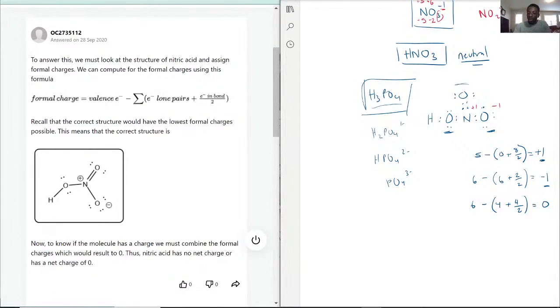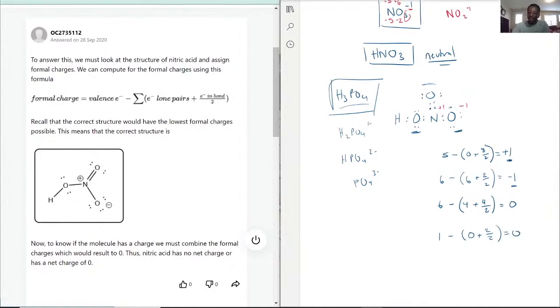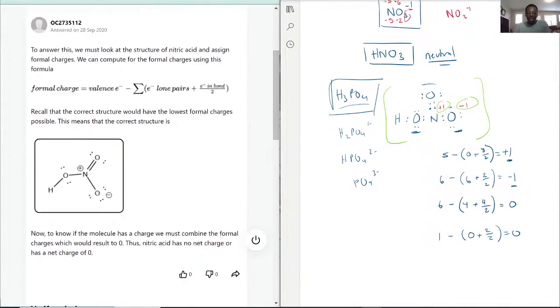The oxygen up top, same thing actually, it has 6, it has 4 by itself, and it's sharing 4. And the hydrogen, just to make sure, typically has 1, doesn't have any, and it's sharing 2, and that equals 0 as well. So all the math checks out to where actually, you know where your positive charge is held, and your negative charge is held, to where the whole compound itself, nitric acid, is neutral, just as how the picture has shown.